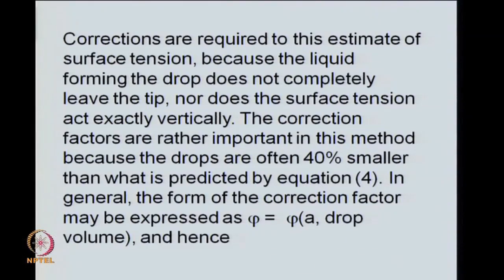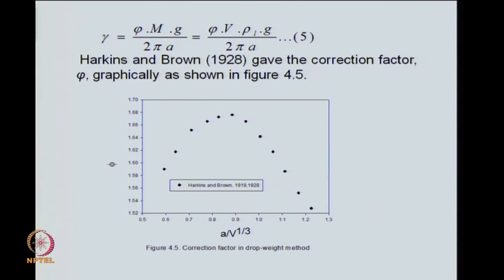What do we expect the correction factor to depend on? First, we name it phi. We expect it to depend on drop volume. We expect it will depend on the tip of the capillary. Very careful measurements have revealed that correction factors greater than 1 on this plot the magnitudes are spanning range from 1.52 to 1.70 for the correction factor of phi. Correction factor greater than 1 is to be incorporated in the numerator because the volume of the drop or mass of the drop is actually smaller than what is predicted in the equation.